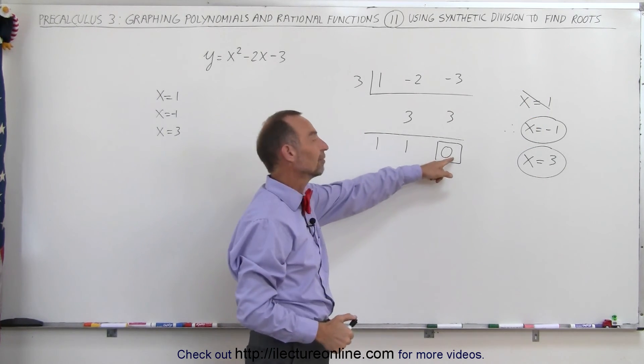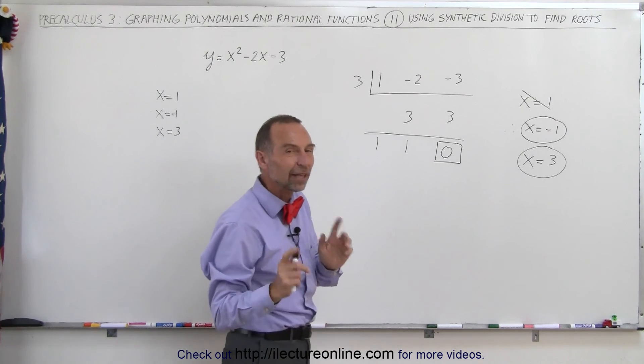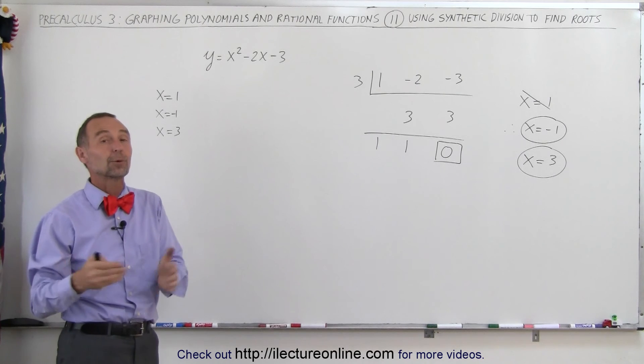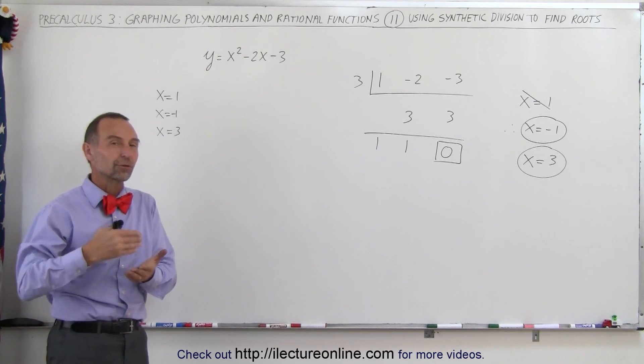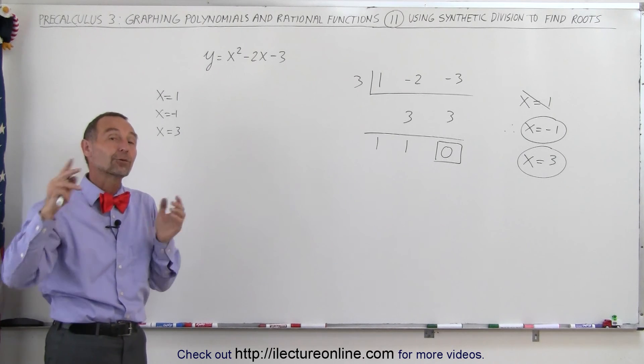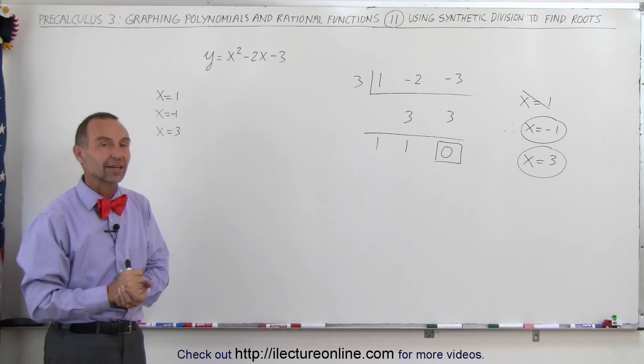Make x smaller, and see if this number finally goes to zero. So, that's how we use synthetic division to find the roots, which comes in really handy when we try to graph polynomials of third order, fourth order, and fifth order to find the roots so we know where the polynomial, where the graph of the polynomial crosses the x-axis.